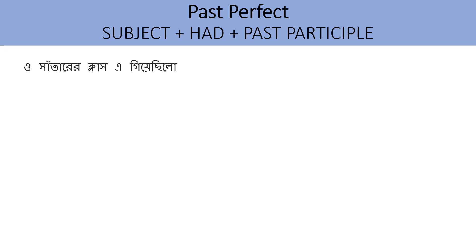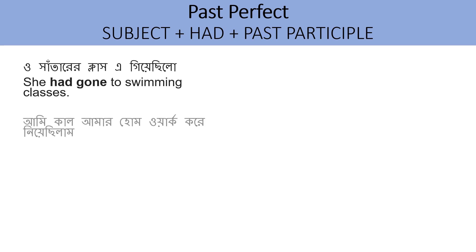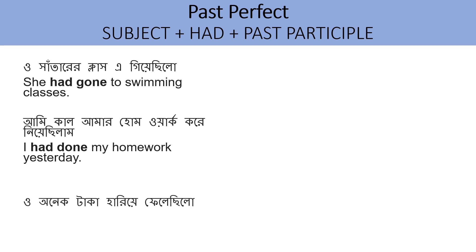ও সাঁতারের ক্লাসে গিয়েছিল — She had gone to swimming classes. The subject is 'she', followed by 'had', then the past participle of 'go' → 'gone'. আমি আমার homework করে নিয়েছিলাম — I had done my homework yesterday. 'Done' is the past participle of 'do'. ও অনেক টাকা হারিয়ে ফেলেছিল — She had lost a lot of money. 'Lost' is the past participle of 'lose'.